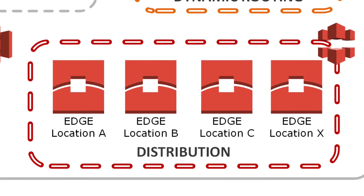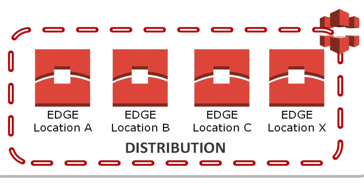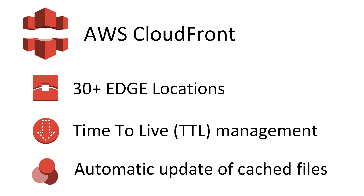Thanks to Amazon CloudFront, you can create a content delivery network, or CDN, to increase the speed of your static website. CloudFront makes website content available from more than 30 edge locations around the world, so visitors can download content from the nearest data center. Using edge locations to serve web pages improves speed and reduces latency.